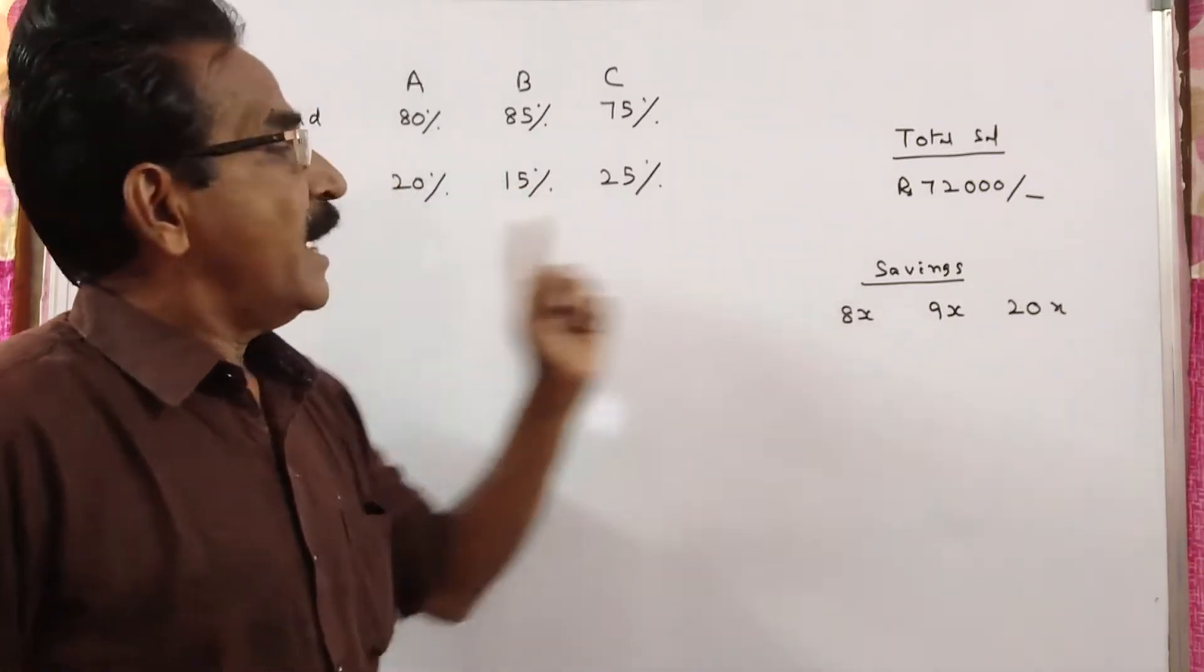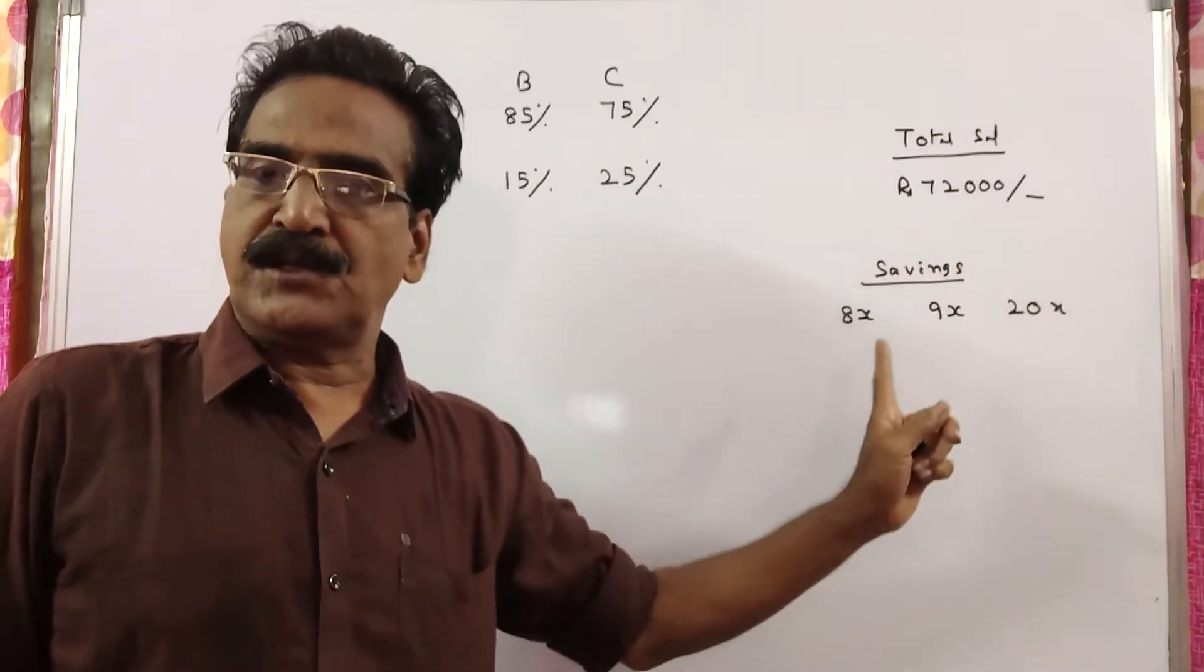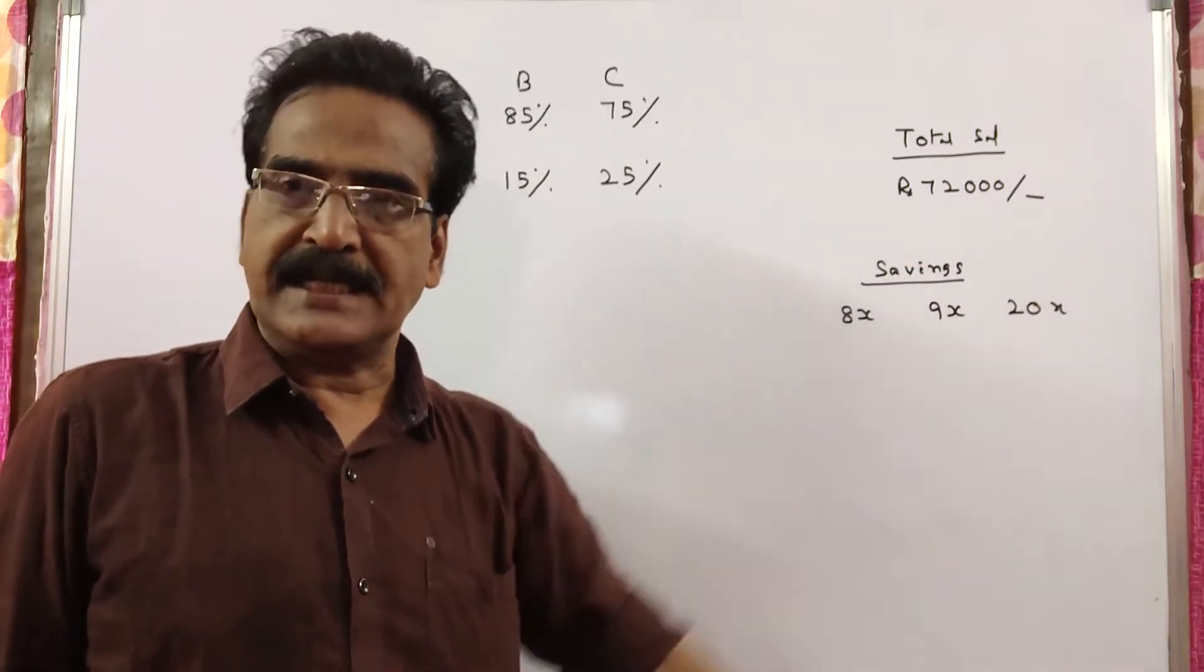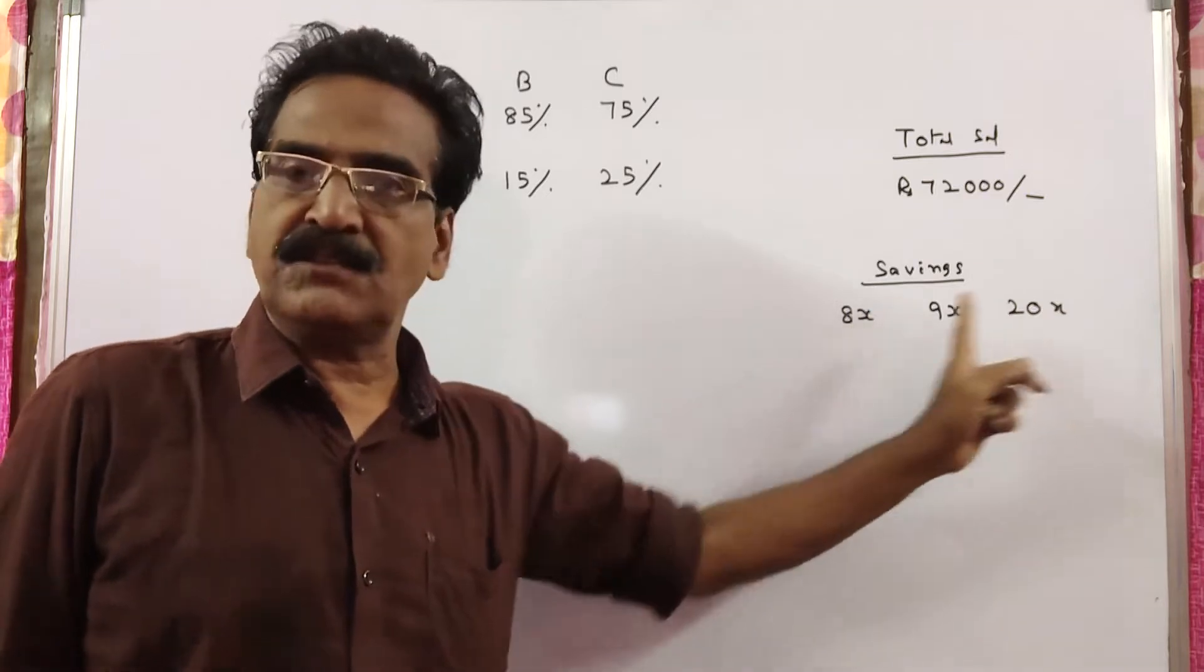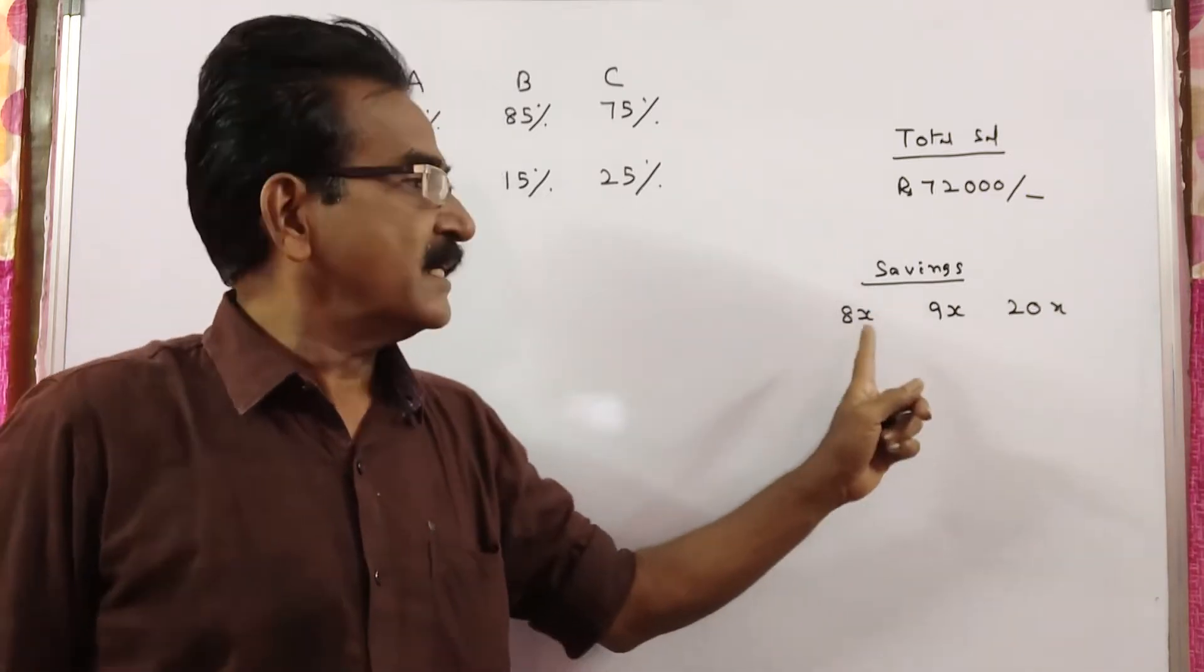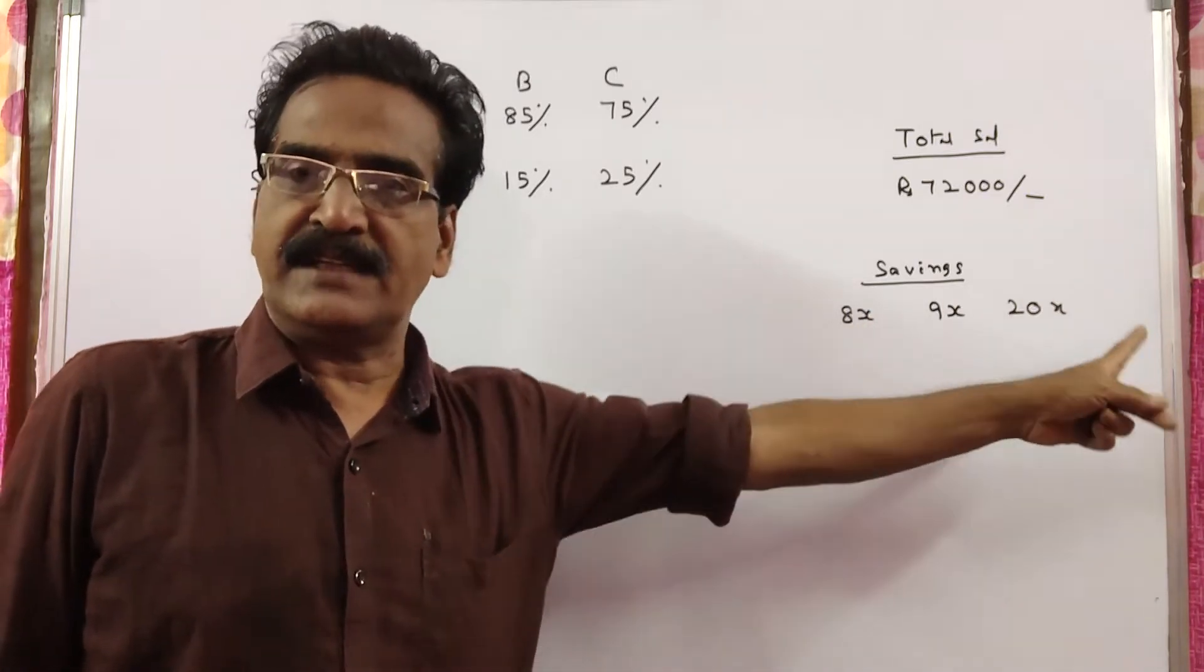Their savings are in the ratio 8 is to 9 is to 20. So their savings are say 8x, 9x, and 20x.